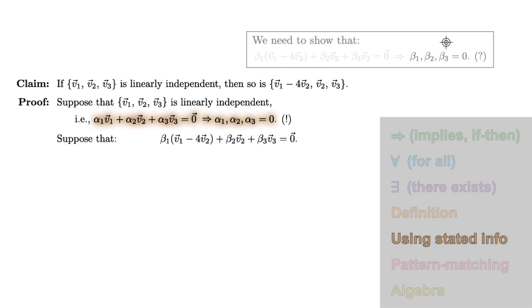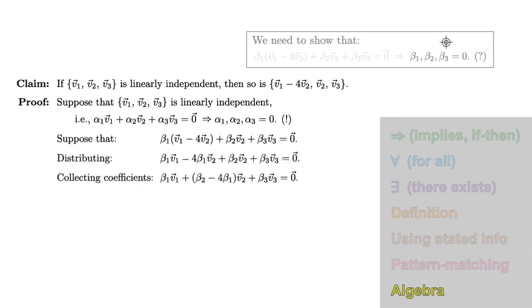Our hypothesis tells us that a linear relation on v1, v2, v3 must be trivial. So, if we can write our linear relation in that form, we can use that hypothesis. Multiplying it out, and collecting coefficients of v1, v2, v3, we do see a linear relation on those three vectors.